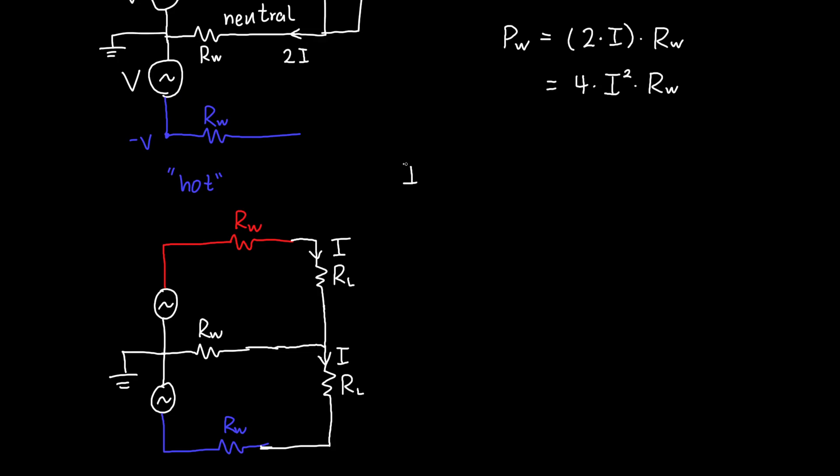Where remember I is very approximately V divided by the load resistance if we ignore the wire resistance in this case. But now what is the power dissipated in each of the wires? The current is flowing through the top wire and the bottom wire. Well, it's just the current flowing through the wire, which is I² times the wire resistance.